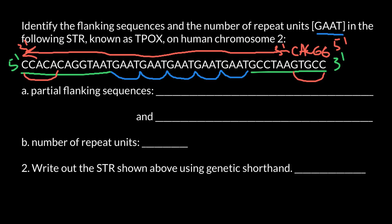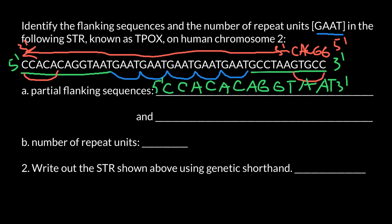The sequence would be as follows. The first flanking sequence would be CCACACACAGTAA, with the 5' end here and 3' end here. The second flanking sequence is going to be GCCCTAAGTGCCC, with the 3' end here and 5' end here. So these are the 2 flanking sequences.